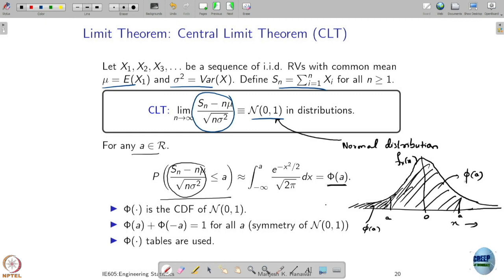So basically, as you see, phi of a is nothing but the CDF of your normal distribution, right? Phi of a is the CDF of normal distribution computed at point a.